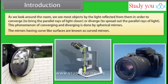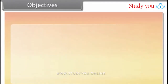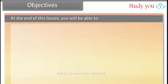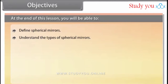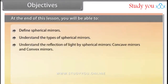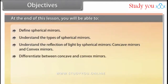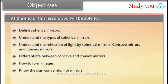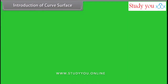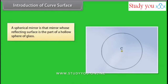The mirrors having curve-like surfaces are known as curved mirrors. At the end of this lesson, you'll be able to define spherical mirrors, understand the types of spherical mirrors, understand the reflection of light by spherical mirrors, and differentiate between concave and convex mirrors. A spherical mirror is that mirror whose reflecting surface is the part of a hollow sphere of glass.